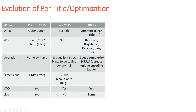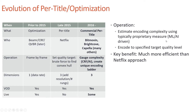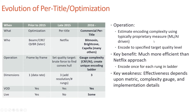After Netflix's announcement, multiple commercial per-title encoding technologies emerged. Capella was first with Cambria FTC encoding, followed by Bitmovin, Brightcove, AWS Elemental, and others between 2016 and today. They typically work by estimating encoding complexity using a proprietary machine-learning or AI-driven measure, then encoding to a specified target quality level. This is more efficient than the Netflix brute-force approach. AWS Elemental and Harmonic support live; most are VOD only.